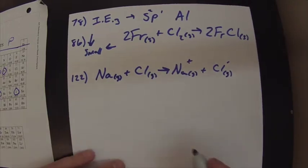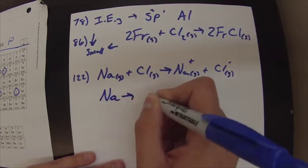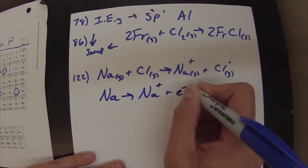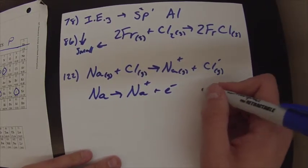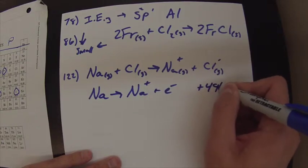Alright, so if you look at the table, you see a couple things. You see that sodium turning into sodium ion plus an electron, that's sodium losing an electron, has a delta E of positive 496.